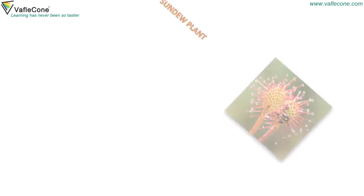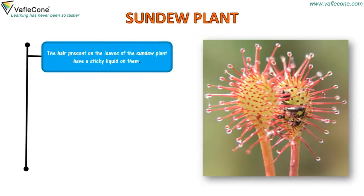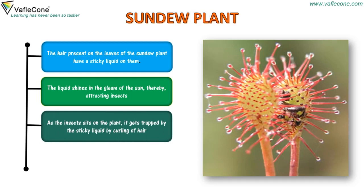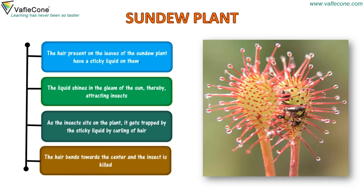The hair present on the leaves of the sundew plant have a sticky liquid on them. The liquid shines in the gleam of the sun, thereby attracting insects. As the insects sit on the plant, they get trapped by the sticky liquid through curling of hair. The hair bends towards the center and the insect is killed.